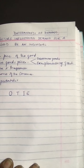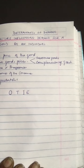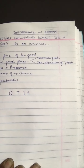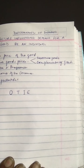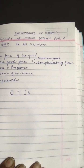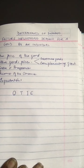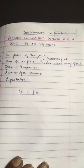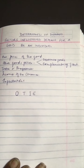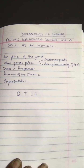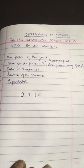Now let's talk about prices of other goods. There are certain goods that are related. For related goods, we have substitute goods, complementary goods, and unrelated goods.